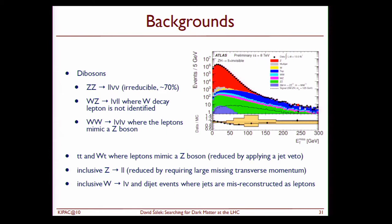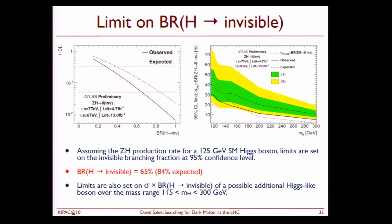What you can see here is the agreement between data and standard model background predictions. And based on this we again can set limits on branching ratio for Higgs to invisible. So assuming that we have this 125 GeV standard model Higgs boson, we can set limits on the branching fraction to invisible. And this analysis actually gives us 65% observed limit on Higgs going to invisible. And also we can set limits on sigma time branching ratio of Higgs to invisible for a possible additional Higgs like boson in this given mass range. So what we are actually using is 115 GeV up to 300 GeV.